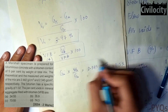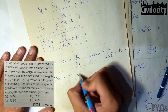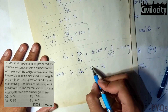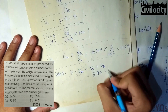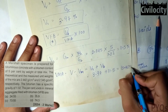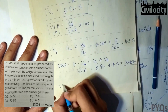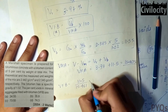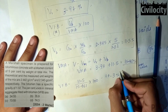Next, find VMA (voids in mineral aggregates) = total volume minus volume of mineral aggregates = volume of voids plus volume of bitumen = 3.97% plus 11.5% = 15.461%. Now VFB = 11.5 divided by 15.461 into 100 = 74.3%, which is the last option.